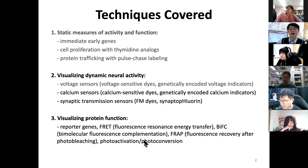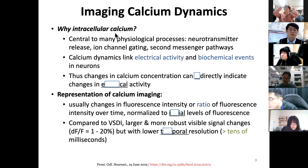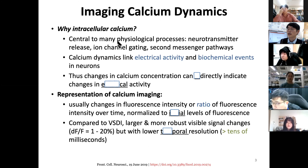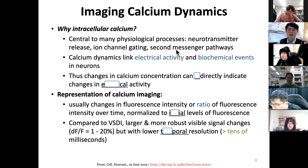First let's talk about calcium, especially intracellular calcium. Calcium ions are very important in cellular physiology and central to many physiological processes in neuroscience — for example, neurotransmitter release from the synaptic terminal. Calcium influx through channels, ion channel gating, and calcium's role in the second messenger pathway make it broadly very important. We use calcium as a surrogate marker for neuronal activity.